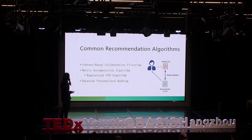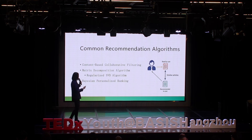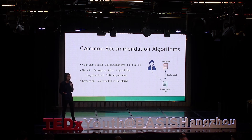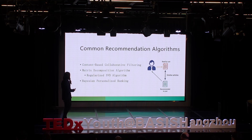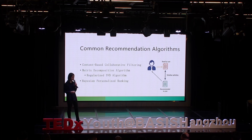The third one is Bayesian personalized ranking, also one that we will use later. In Bayesian personalized ranking, we have a ranking — which is different from the above methods. The above methods usually produce a predicted score or rating that a book will get. However, in Bayesian personalized ranking, we obtain the optimal ranking by comparing the ranking of one specific book to another.